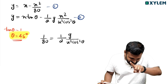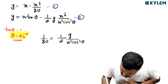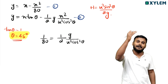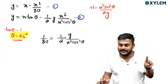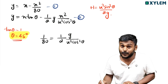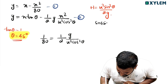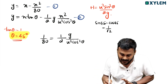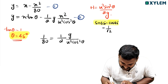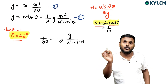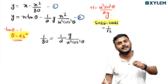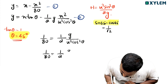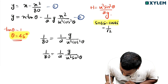Let's take a look at the maximum height. Maximum height H equals u² sin²θ divided by 2g. Since sin 45° equals cos 45° equals 1/√2, we will replace cos²θ with sin²θ. So 1/80 equals g / (2u² sin²θ), giving us u² sin²θ equals 80g/2.